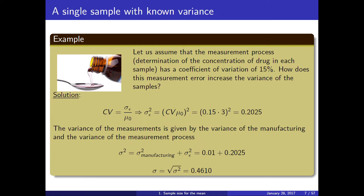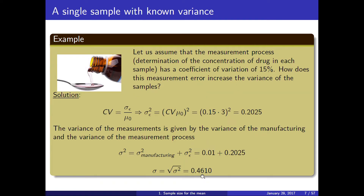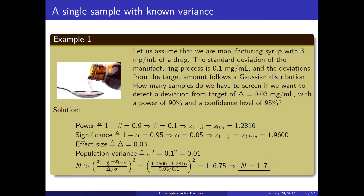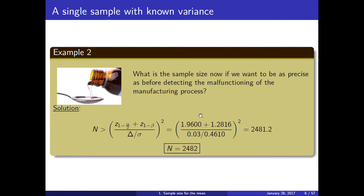You can see that the variance of the measurement is 20 times the variance of manufacturing. In terms of standard deviation, it was 0.1 mg/mL before; now it is 0.46 — about 46 times larger. So we have much more variability, and we still want to detect deviations as small as 0.03 mg/mL. Our normalized effect size will now be 46 times smaller.